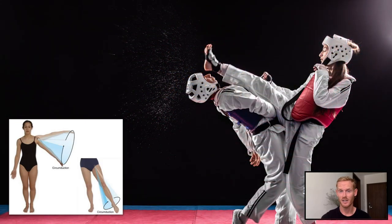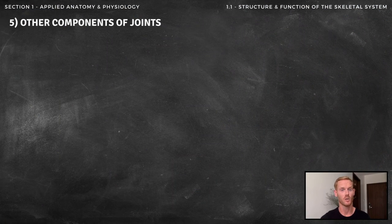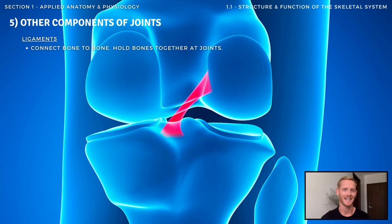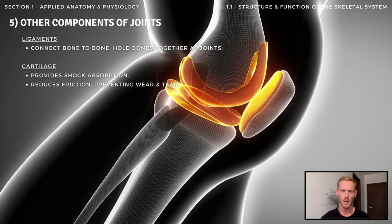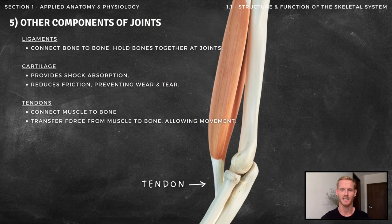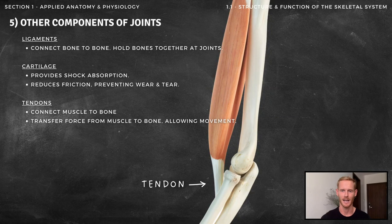Moving on to the final section of topic 1.1 — other components of joints, specifically the role of ligaments, cartilage, and tendons. Ligaments hold articulating bones together at joints and prevent any unwanted movements from occurring. Cartilage is a tough yet spongy material that lines and protects the ends of articulating bones, providing some shock absorption and reducing friction. Finally, tendons are bands of tough connective tissue that connect muscles to bones. Their role is to transfer force from the muscles as they contract to the bones, creating movement at joints.